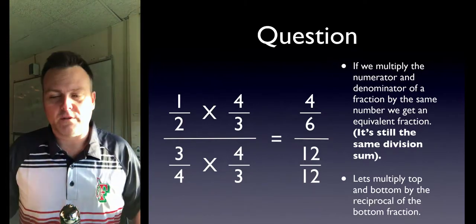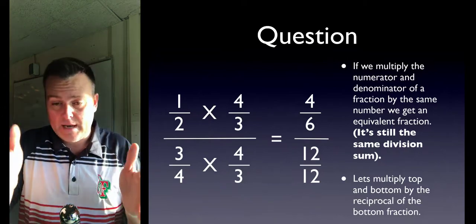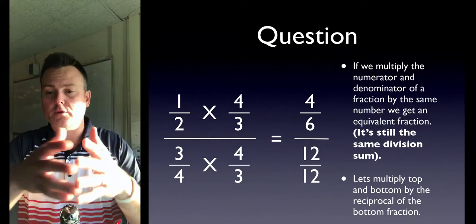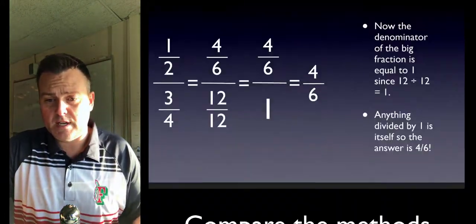If you multiply the top, one times four is four, two times three is six. And the bottom gives us twelve over twelve. Well, twelve over twelve just reduces down to one—we should know that.